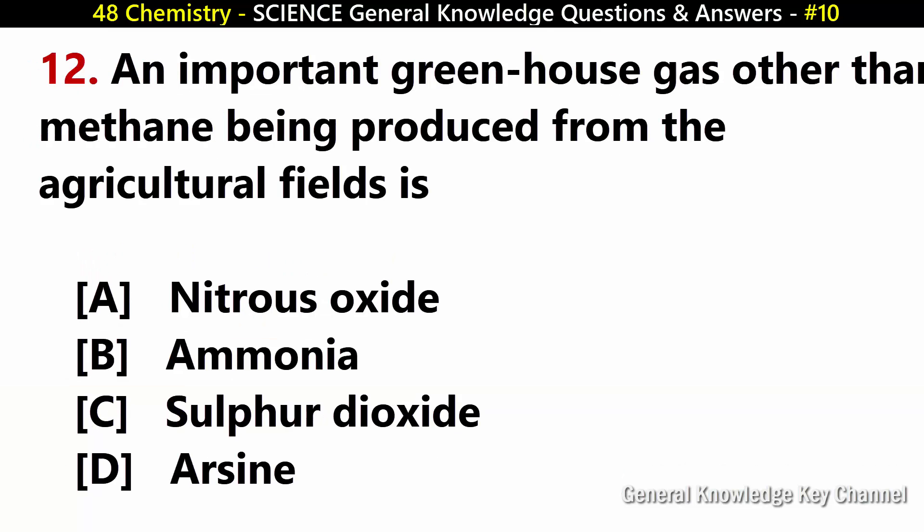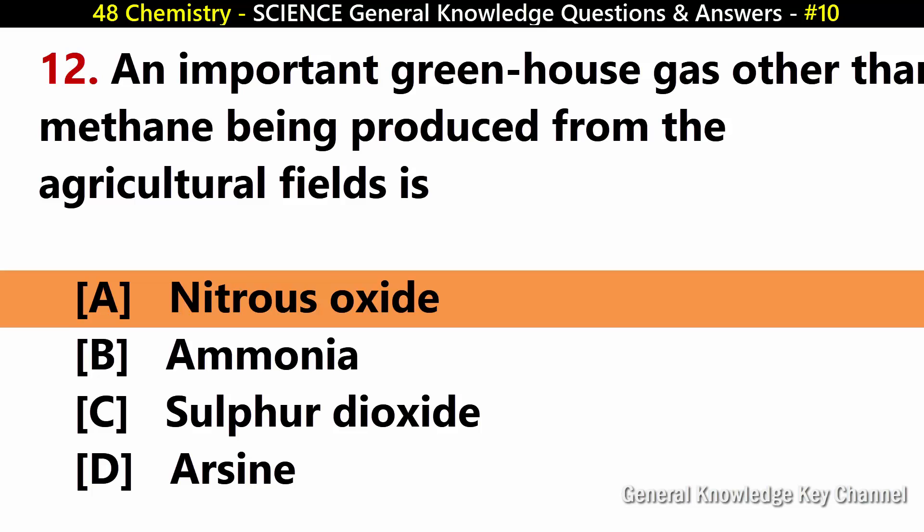An important greenhouse gas other than methane being produced from the agricultural fields is? Answer A: Nitrous oxide.